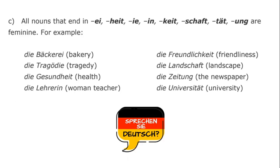There are other endings which denote gender. For example, all nouns that end in '-ei,' '-heit,' '-e,' '-in,' '-keit,' '-schaft,' '-tet,' '-ung,' etc., indicate a particular gender.